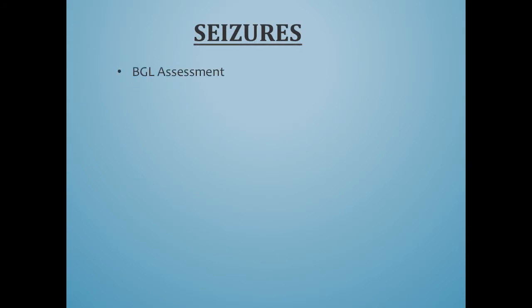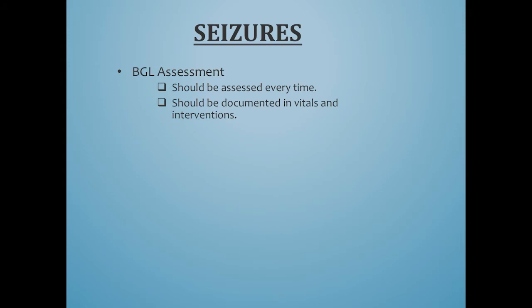BGL assessments — there were many calls where we found no BGL assessments, and BGL assessments in seizures are very important. Any type of altered mental status or questionable mentation, a BGL assessment is important and should be assessed every time. Every seizure call or questionable mentation should have BGLs assessed. It should be documented in your vitals and your interventions. It just helps everyone reviewing the call get a better understanding of the situation. You should put a pre- and post-treatment BGL if indicated — if you gave glucose or any other treatment, record a BGL before and after. Some of them slipped through the cracks.